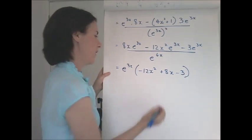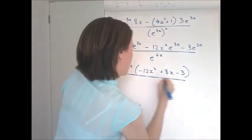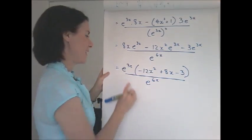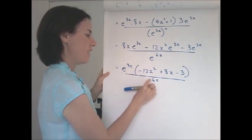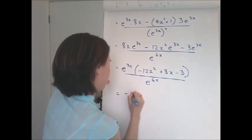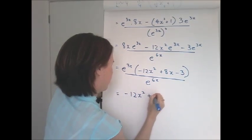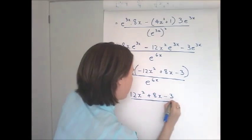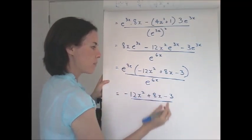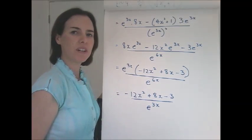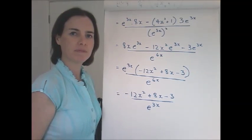So that's the top factorized over e to the 6x, and then I can cancel. I've got a common factor here of e to the 3x. So divide it away from the top and divide this by e to the 3x, we are left with e to the 3x.